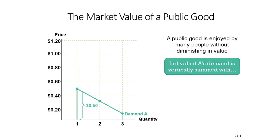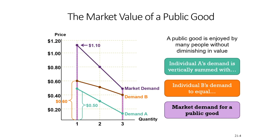In the last class we depicted a diagram of the market value of a public good, where the x-axis shows quantity demanded and the y-axis shows price. With two consumers A and B, demand A and demand B show their respective demand curves. But in the context of a public good, instead of a horizontal summation, we use a vertical summation of prices or valuations, resulting in the market value of the public good.